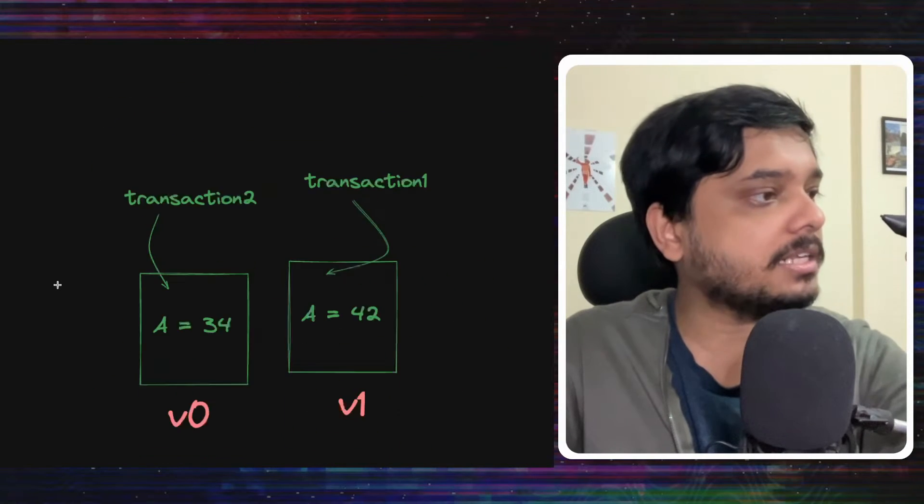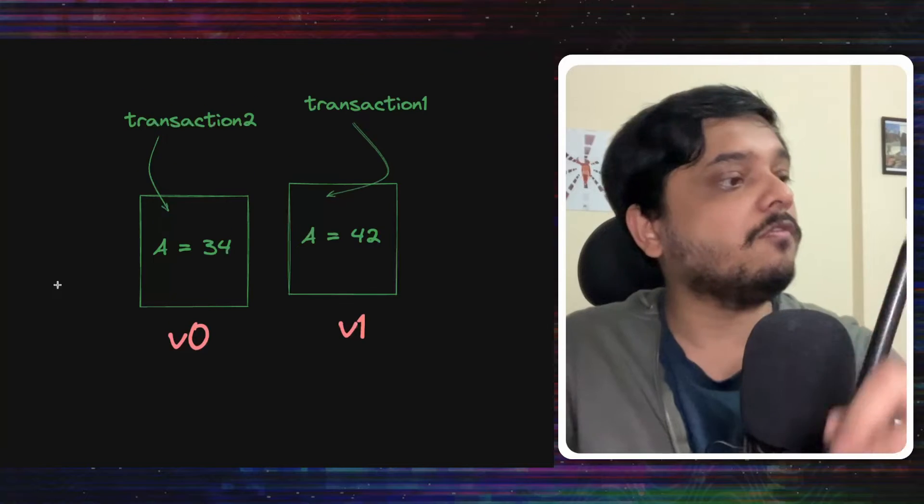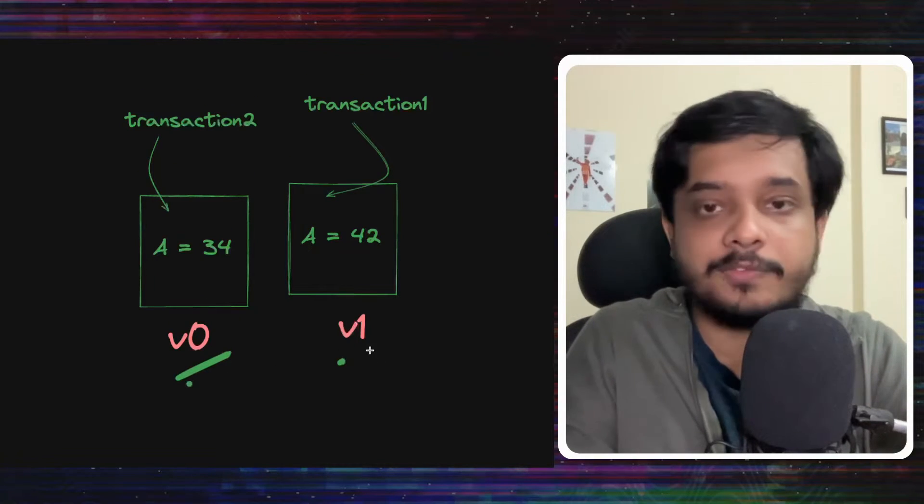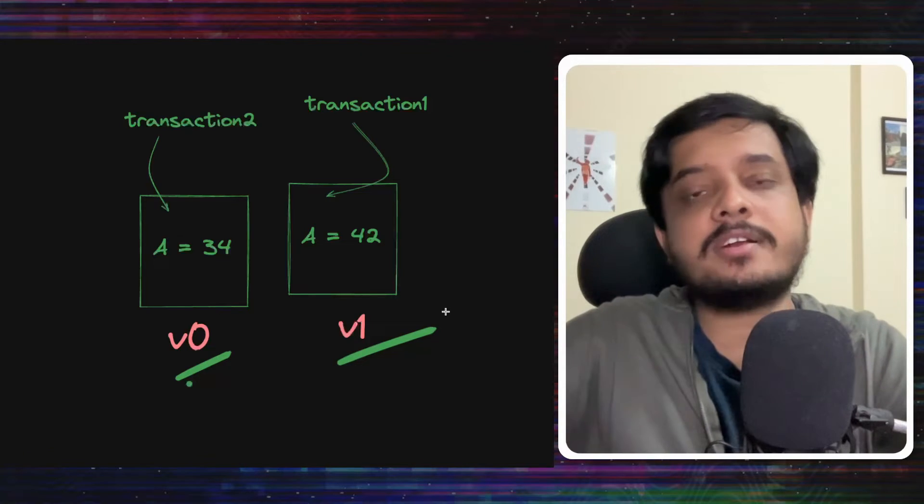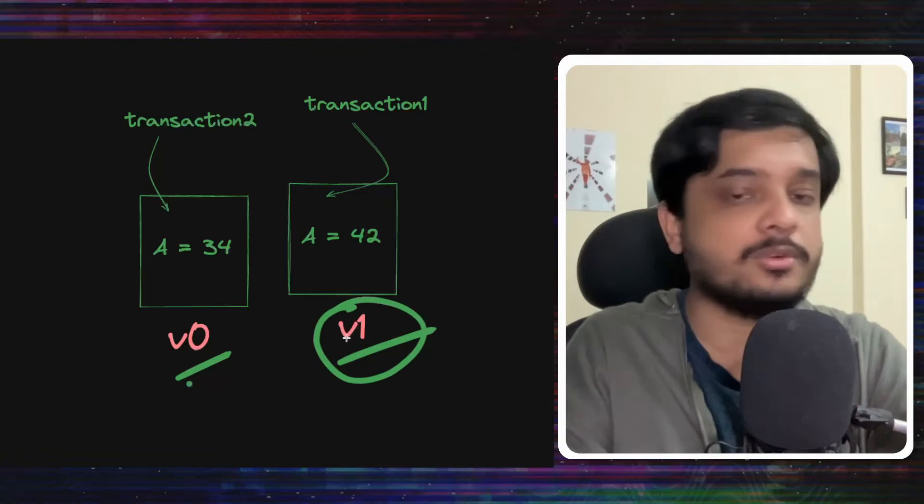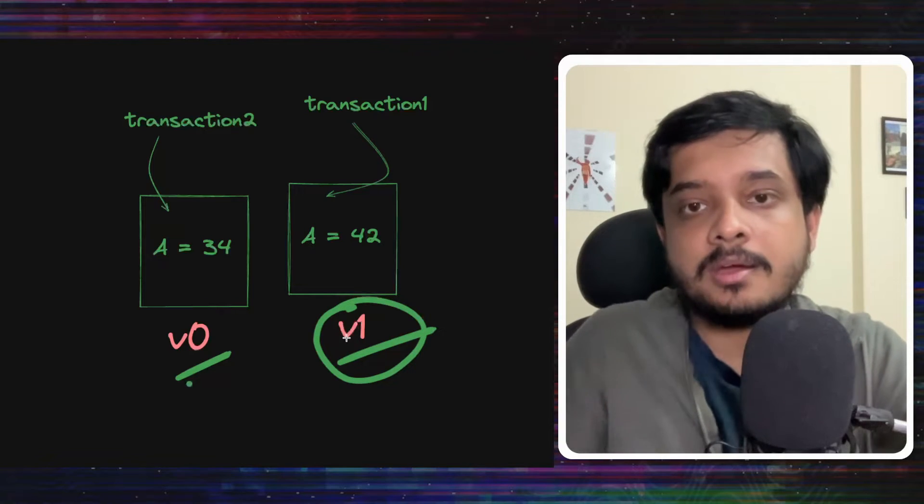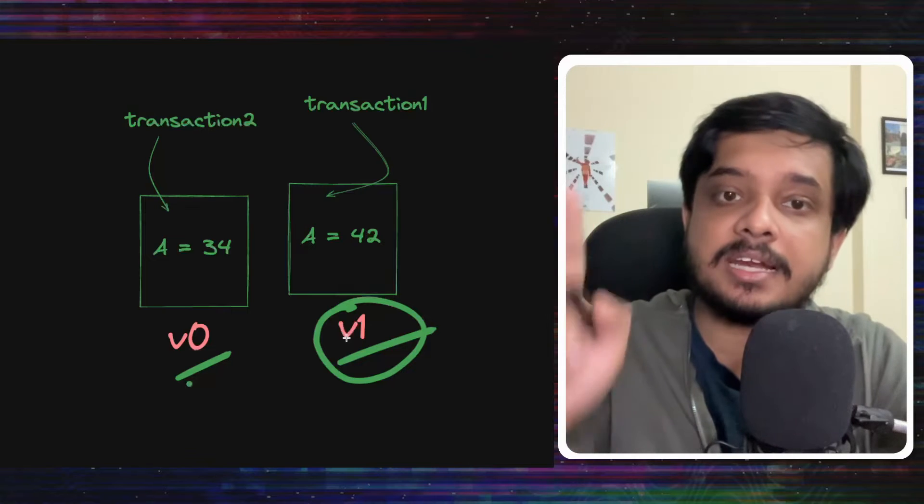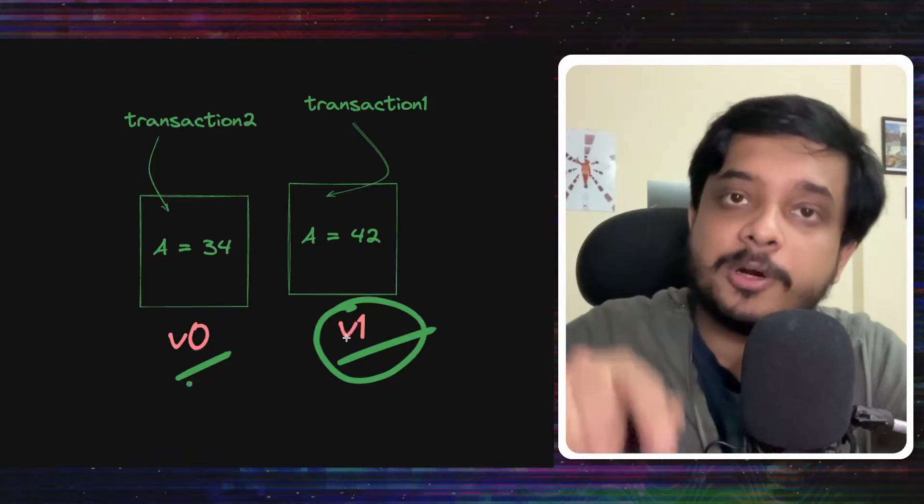How will the next transactions know which value of A to read? This is why we consider these copies versions of data. If this is version 0, this would be version 1. Initially when transaction 1 is uncommitted, no one uses this version. This is inactive. But when it gets committed, every transaction uses the latest version of a particular piece of data.